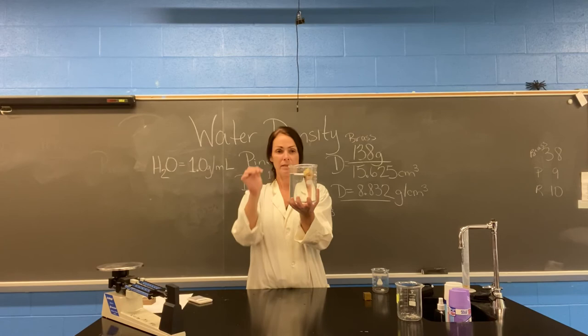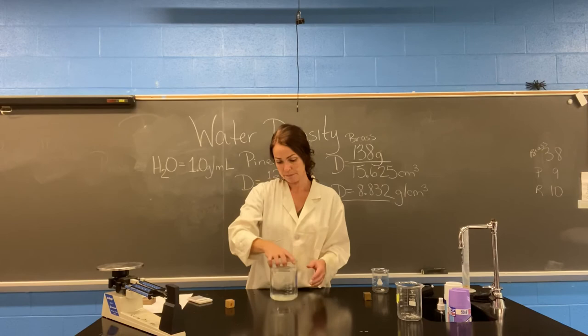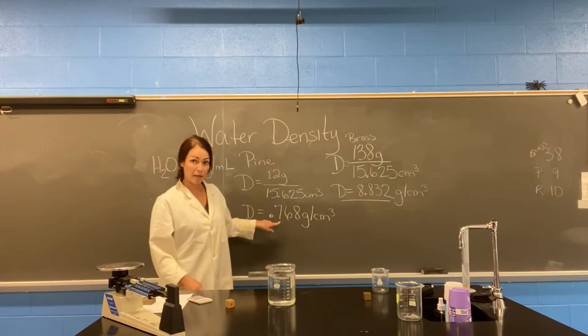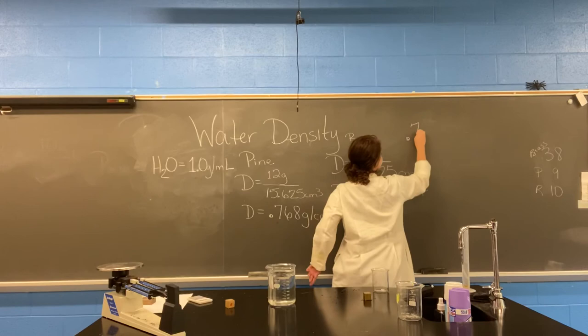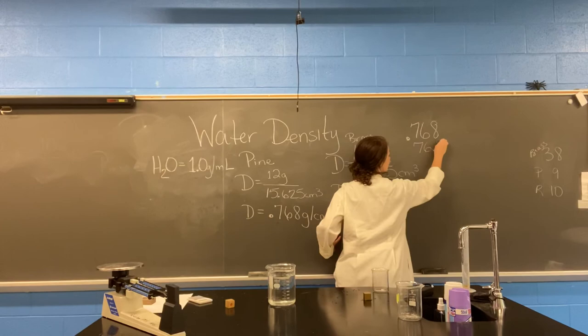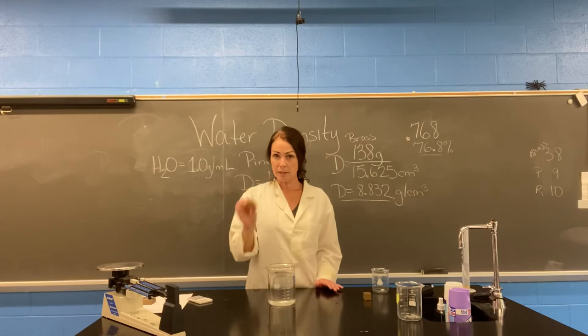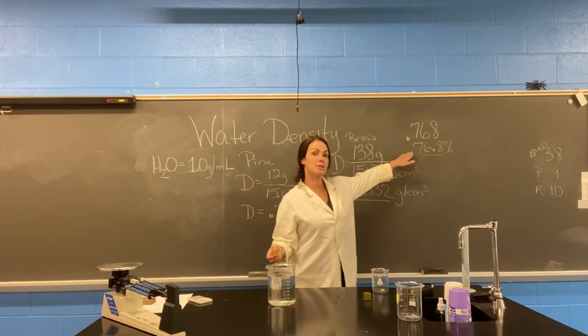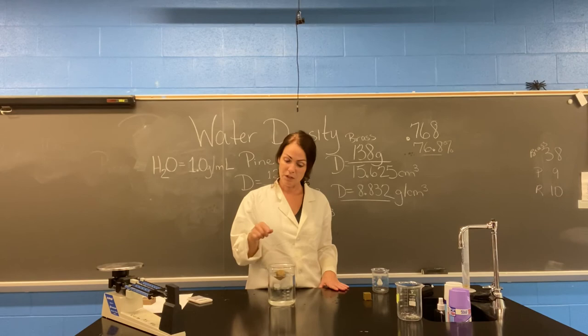Here's an interesting piece of information. If you take a decimal like 0.768 and convert it to a percentage, you move the decimal two spaces to the right — so 0.768 becomes 76.8 percent. Magically, when I place this block in water, 76.8 percent of it is under the surface of the water. I'm going to show you how that works.